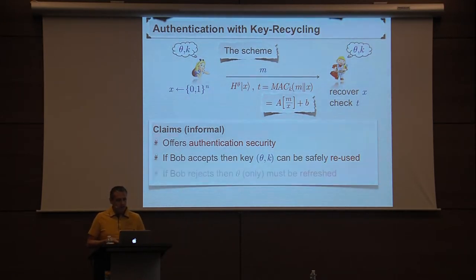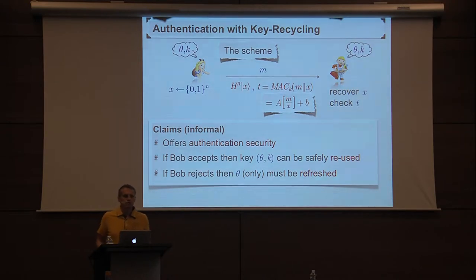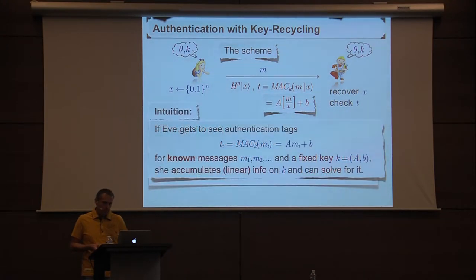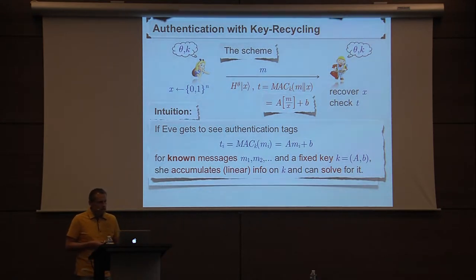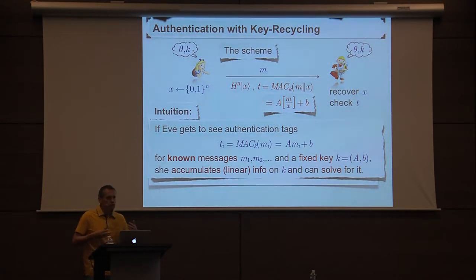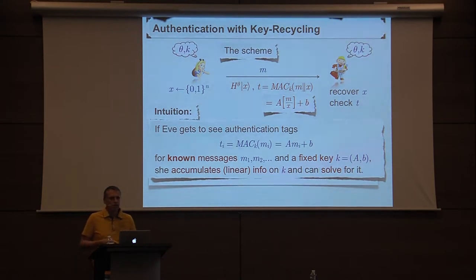Third, if Bob rejects, some eavesdropping may have taken place, Eve may have learned some information on the key, and some key refreshing has to take place. The claim is that it's good enough to refresh theta, but k can still be reused. The intuition behind the key reusing property: it's easy to see that if Eve gets to see more and more authentication tags for known messages under a fixed key, she accumulates more and more linear information on the key and will eventually solve it — that's the typical argument why you cannot reuse a key for such a MAC.